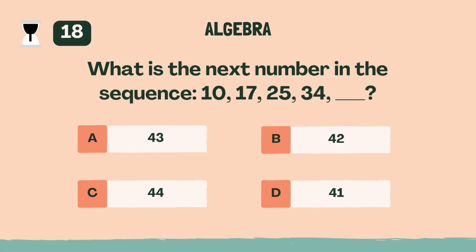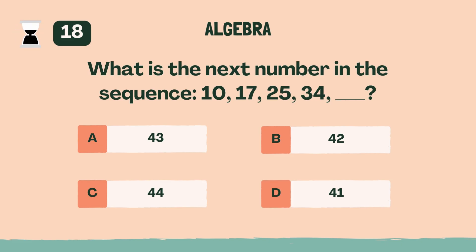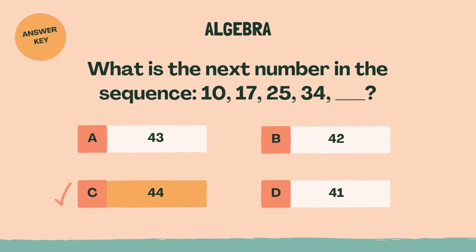What is the next number in the sequence: 10, 17, 25, 34? C, 44.